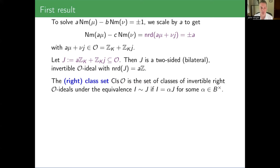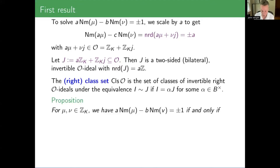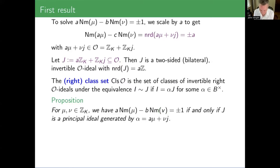We'll have a proposition just as in the quadratic case. Just as in the commutative case, we define something called the right class set of 𝒪 — it's a set of classes of invertible, equivalently locally principal, right 𝒪-ideals under the equivalence that I is equivalent to J if you get from I to J by multiplying by something from the field. Because of noncommutativity, it's really a set of equivalence classes rather than the quotient of one group by another. And then the proposition says: if we want to solve our equation in μ and ν, that happens if and only if this ideal 𝒥 is principal, generated either as a left, right, or two-sided ideal.